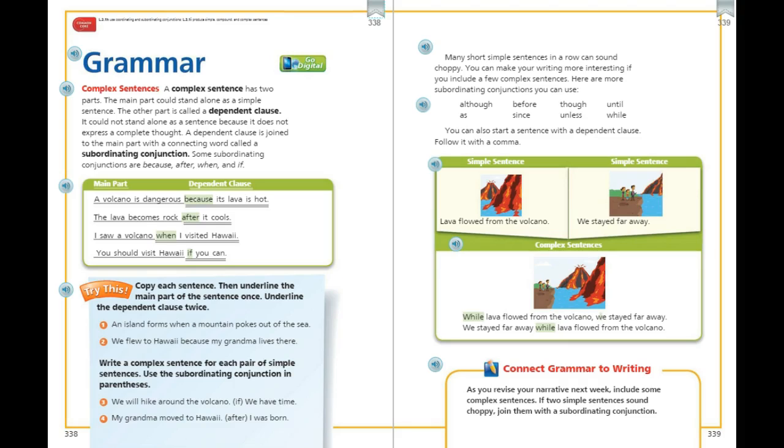Some examples are because, after, when, and if. So if you look at the examples here in the box in the middle of the page, you have the main part: A volcano is dangerous. This part is independent. It can stand by itself. Because is our subordinating conjunction, and the dependent clause is not a complete thought, as its lava is hot.